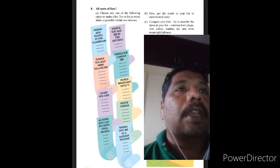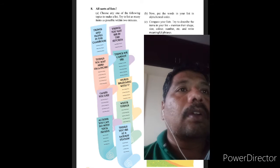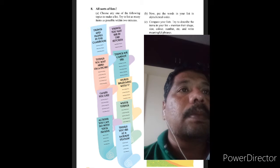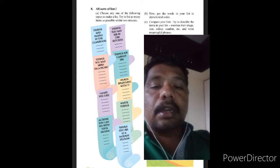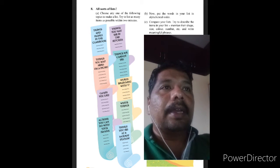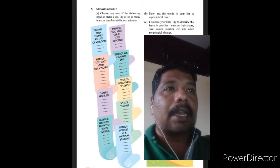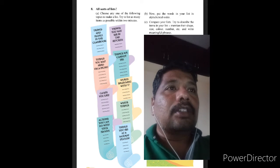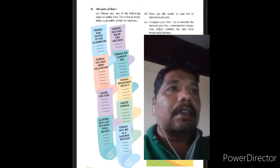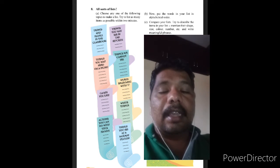Choose any one of the following topics to make a list. Try to list as many items as possible within two minutes. What you have to do here - there are some topics given, and you have to choose one topic and make a list related to it within two minutes.